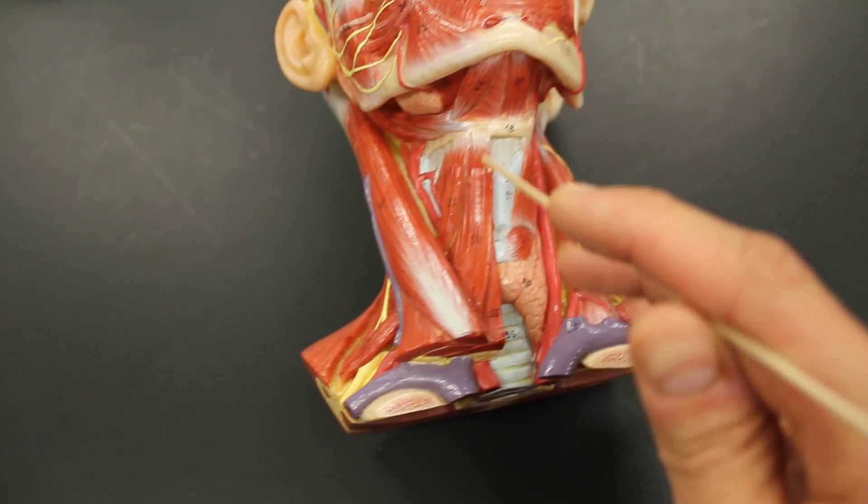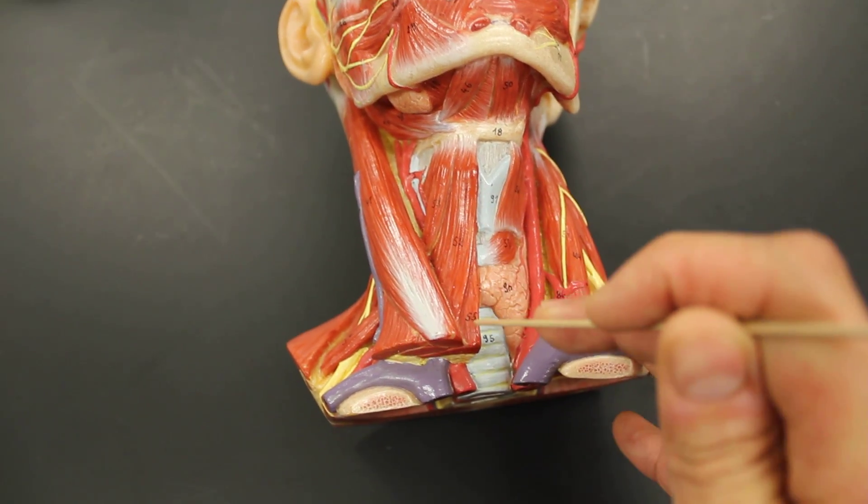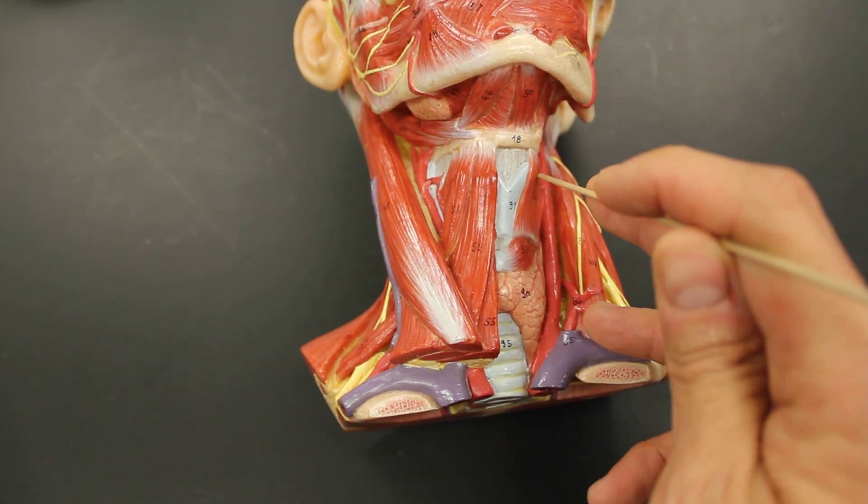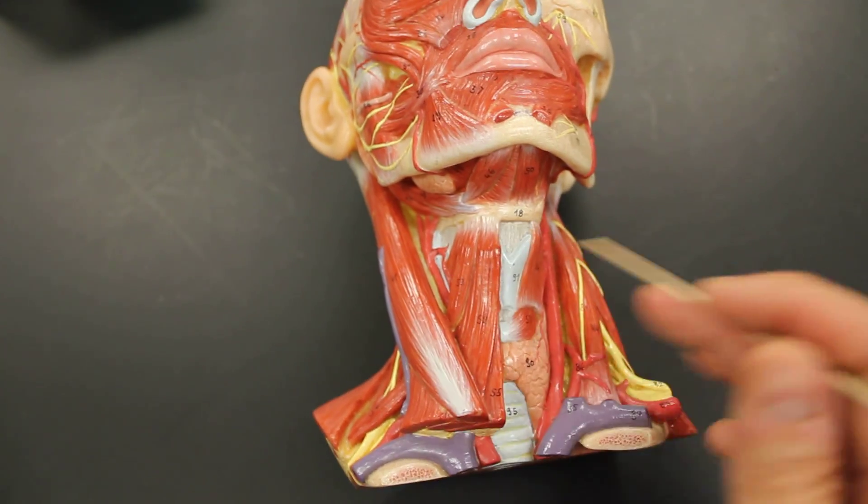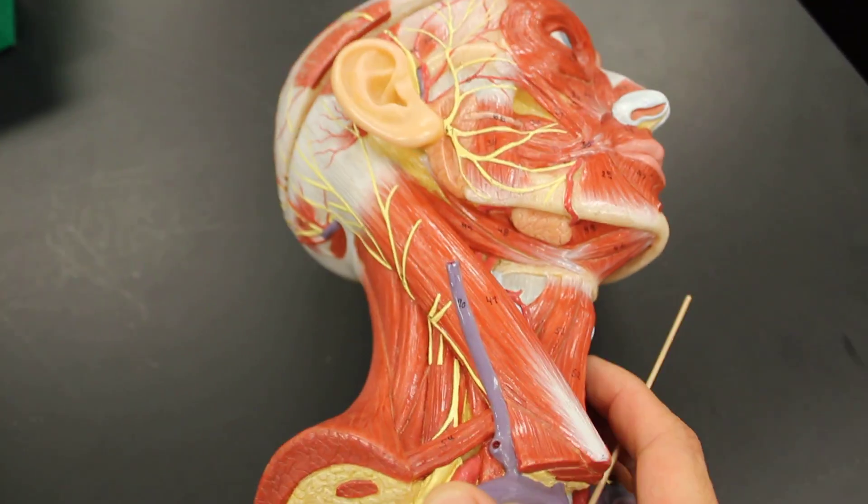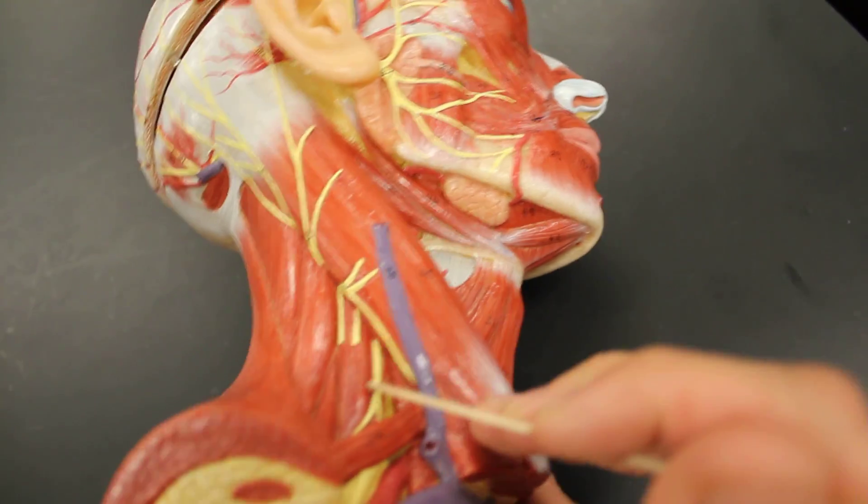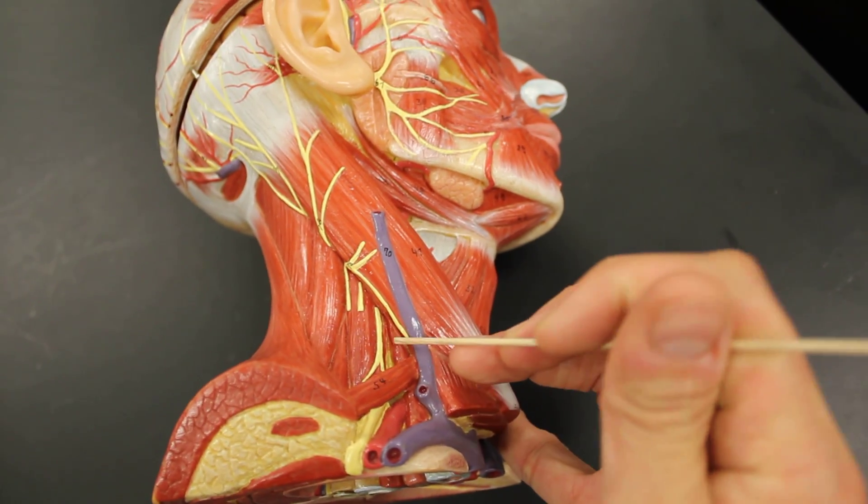Omohyoid, sternohyoid, sternothyroid, thyrohyoid. Alright, let's walk through the last compartment and that's the posterior triangle of the neck. In the posterior triangle of the neck, we just get three muscles that I want you to know and that is the scalenes.